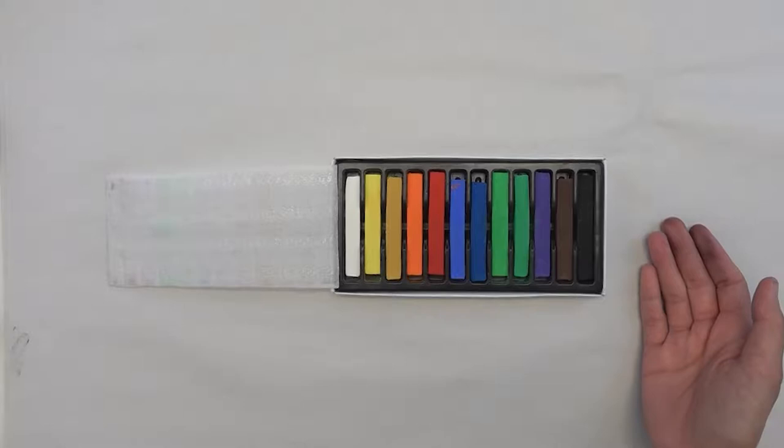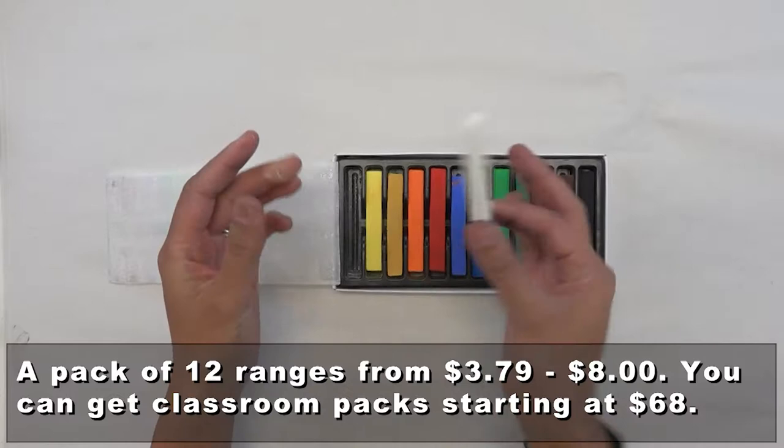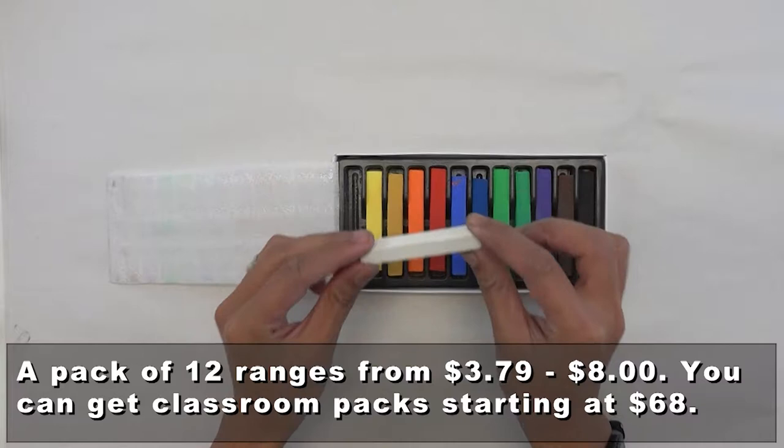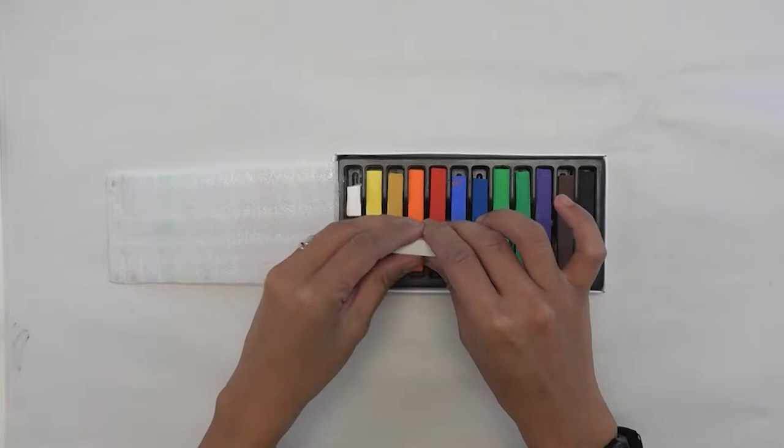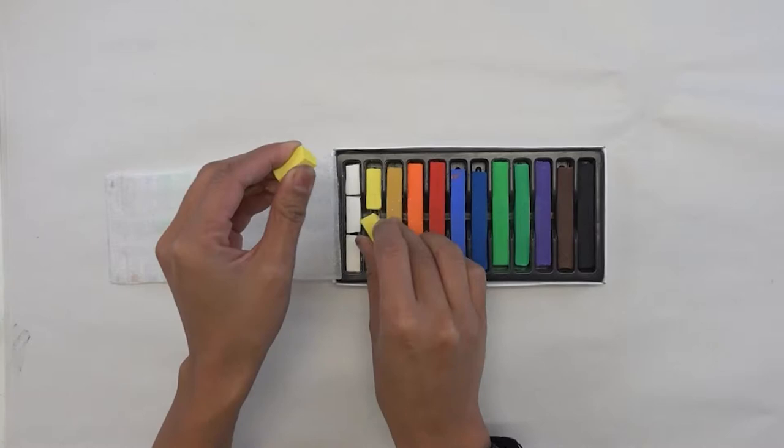First of all, we have a set of chalk pastels. If you've got a set like this, a set of 12, the first thing that you want to do is you never really give the students a big chunk like this because it's very cumbersome. So what we're going to ask is that you actually break it into three pairs. So technically one set can actually work for three students.